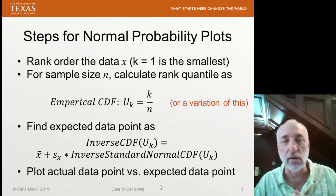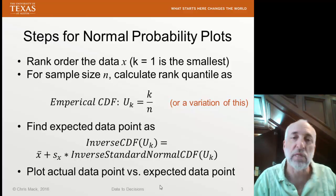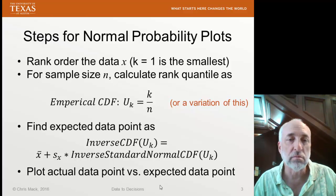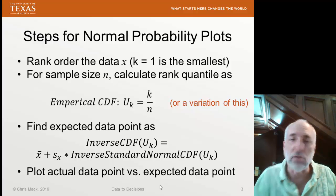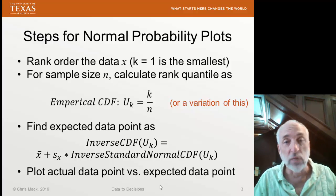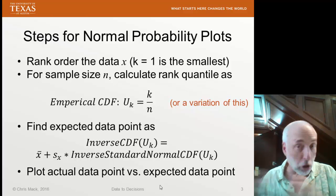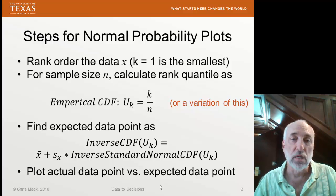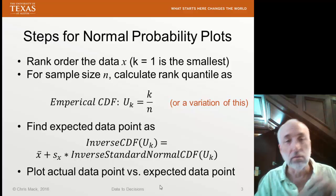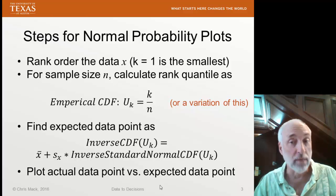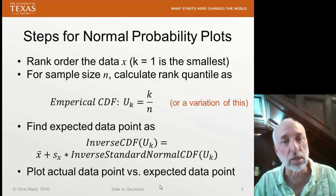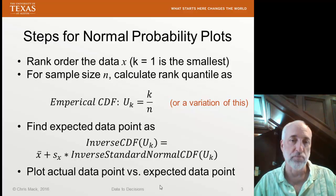But you can see what we're going for here. So when k is 1, then our smallest value has a cumulative distribution of a very small number. And when k equals n, the largest value in our data set, then we have accumulated all the way up to about 1 for our cumulative distribution function.